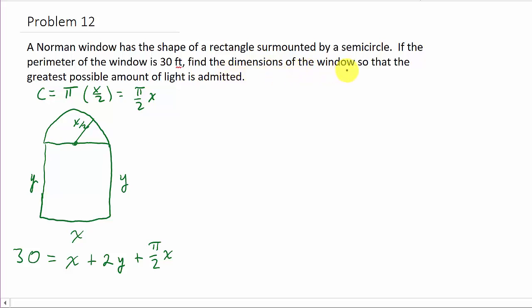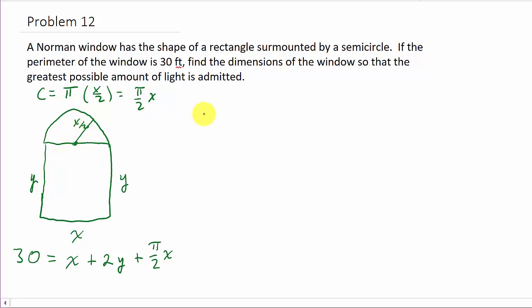We want to find the dimensions so that the greatest possible amount of light is emitted, so we want to maximize the area of the window opening — we want this opening to be as large as possible. The area of the rectangular portion is X times Y.